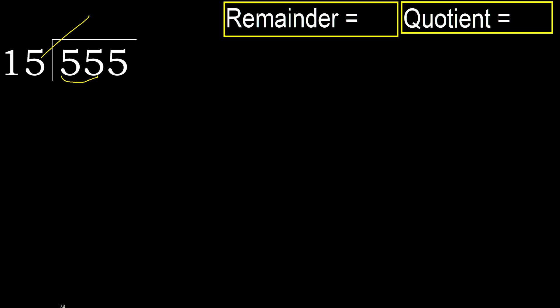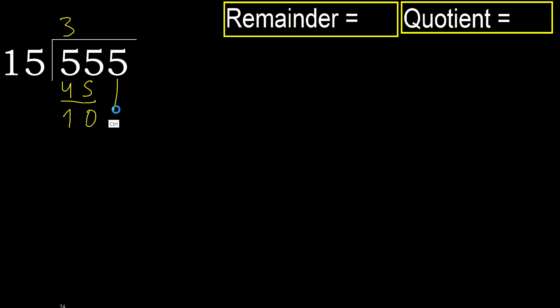But not greater. 15 multiplied by 4 is 60, which is greater. 15 multiplied by 3 is 45, which is not greater. So 55 minus 45 is 10. Next, bring down: 105.